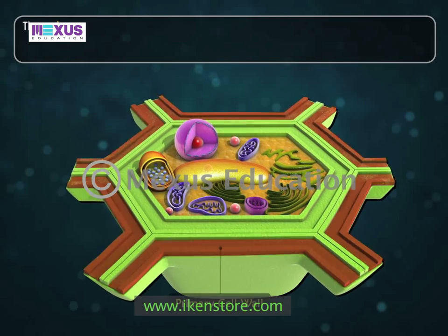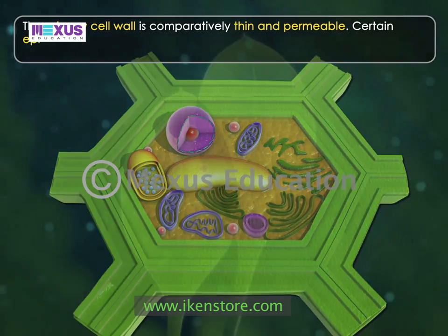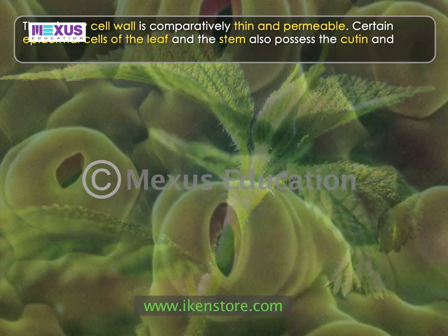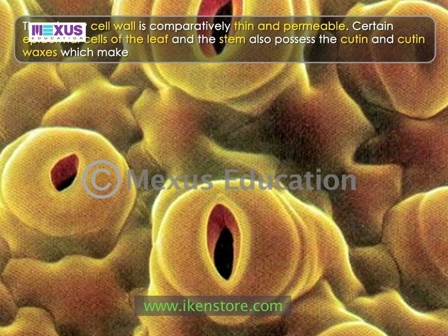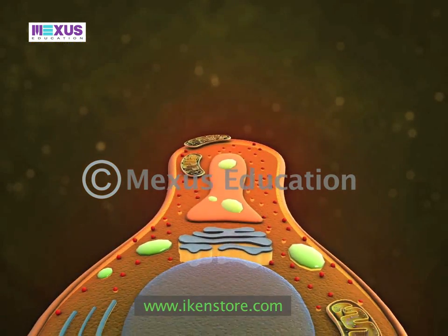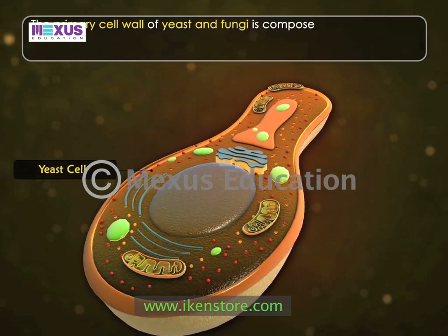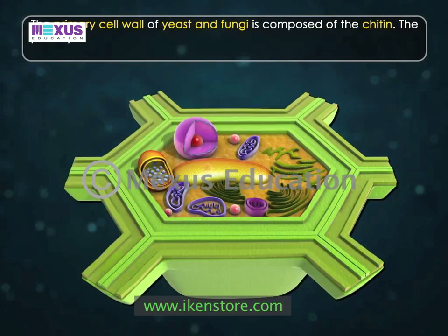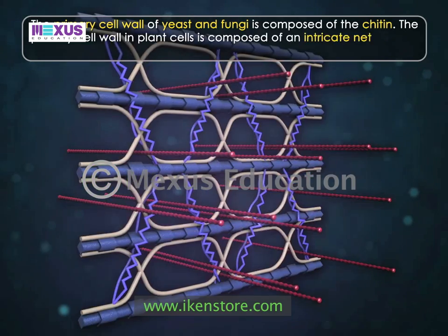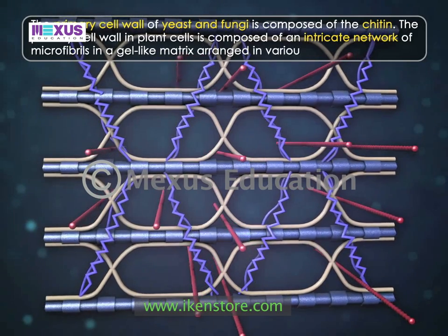The primary cell wall is comparatively thin and permeable. Certain epidermal cells of the leaf and the stem also possess cutin and cutin waxes, which make the primary cell wall impermeable. The primary cell wall of yeast and fungi is composed of chitin. The primary cell wall in plant cells is composed of an intricate network of microfibrils in a gel-like matrix arranged in various manners.